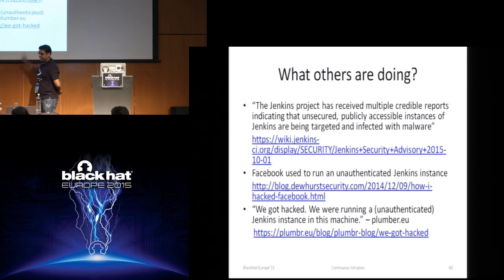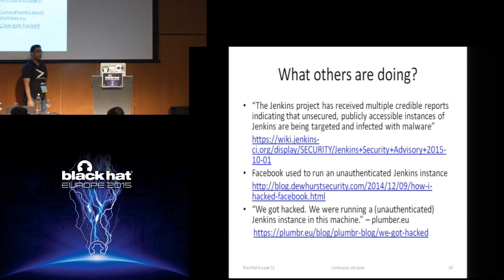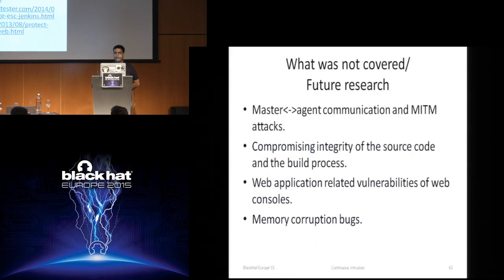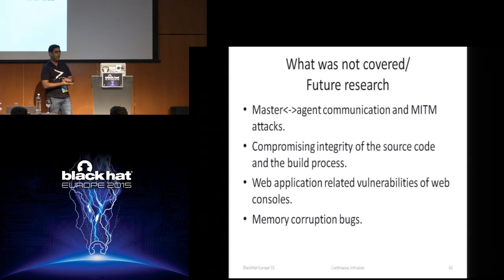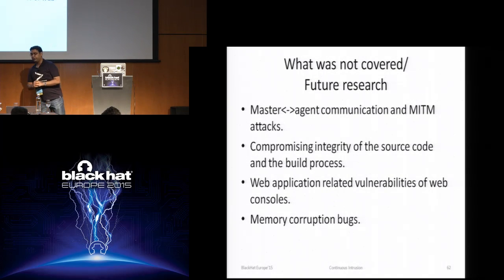What others are doing: Jenkins released a security advisory on October 1st that unauthenticated public instances are being abused by malware writers. Someone got a big bounty because Facebook used to run an unauthenticated Jenkins instance. And someone got really hacked because of unauthenticated Jenkins. What I have not covered includes master-agent communication — so no MITM attacks — compromising integrity of source code and the build process, web application related vulnerabilities, and memory corruption bugs. If you want to do further work, you can try these things out.